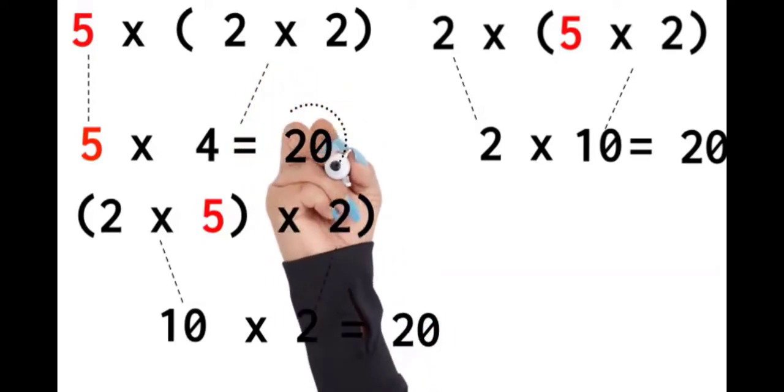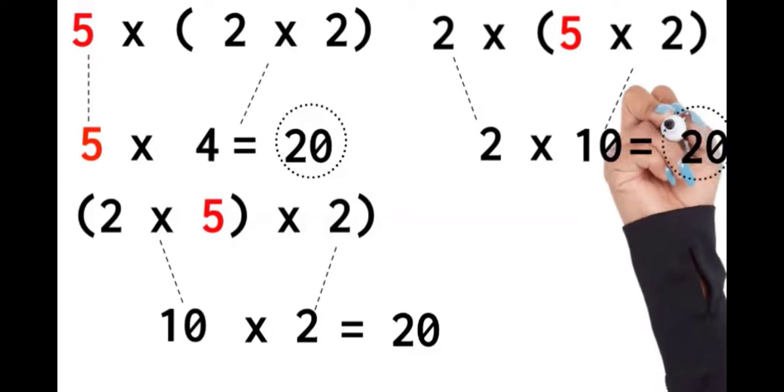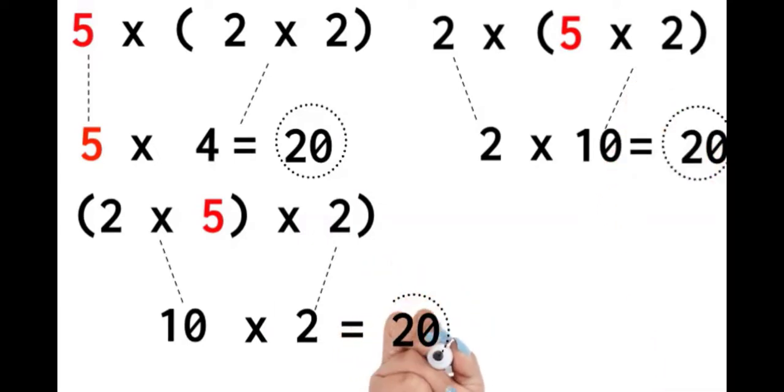So no matter how I group my factors, my answer is 20, 20, and 20. And that's the associative property of multiplication.